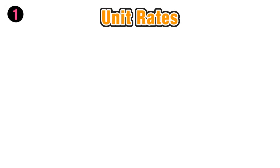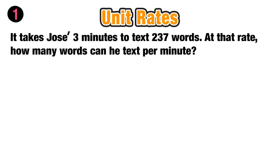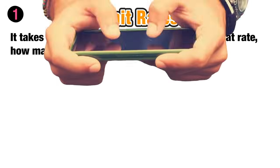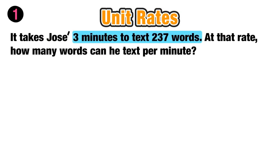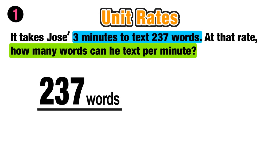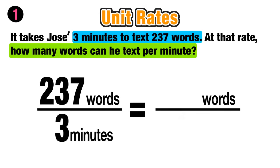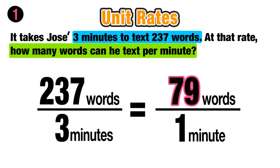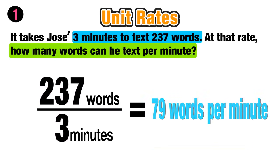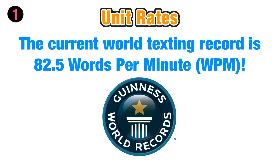In our first practice scenario, it takes Jose 3 minutes to text 237 words. We want to find how many words he can text per minute. We know the rate is 237 words in 3 minutes and want to convert it to a unit rate of words per minute. Since 237 divided by 3 equals 79, the unit rate is 79 words per minute — actually pretty fast, considering the current world texting record is 82.5 words per minute.